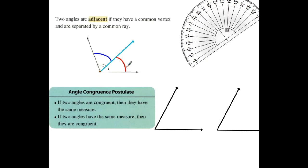The second thing is congruent angles. If two angles are congruent, then they have the same measure. And if two angles have the same measure, then they are congruent. This is the angle congruence postulate: congruent means same measure, and same measure means congruent.